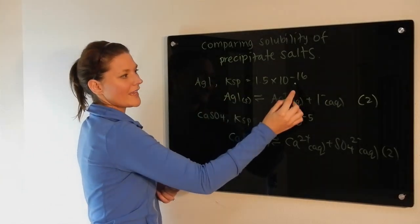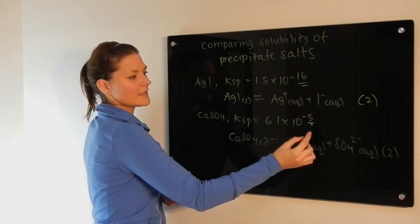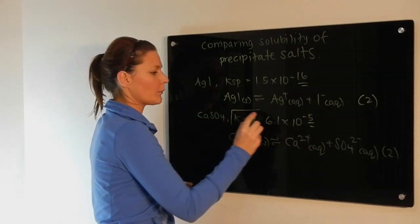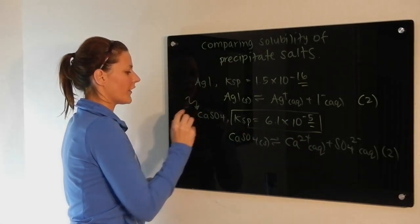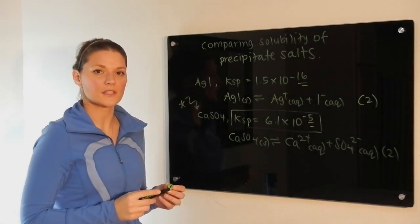So if you look here, we're comparing 10 to the negative 16 to 10 to the negative 5. This here would be the larger number. Therefore, calcium sulfate is the more soluble precipitate.